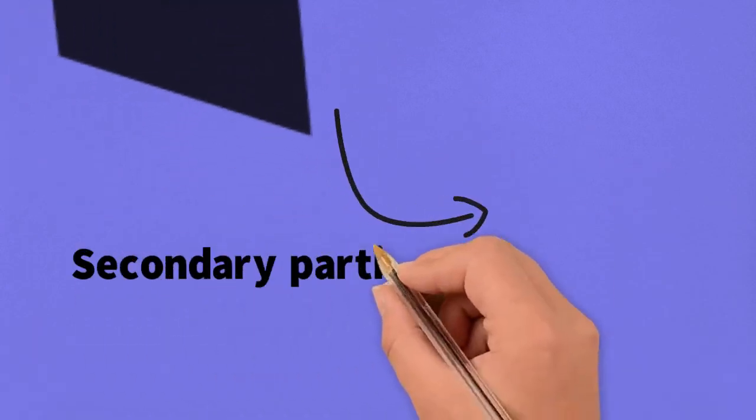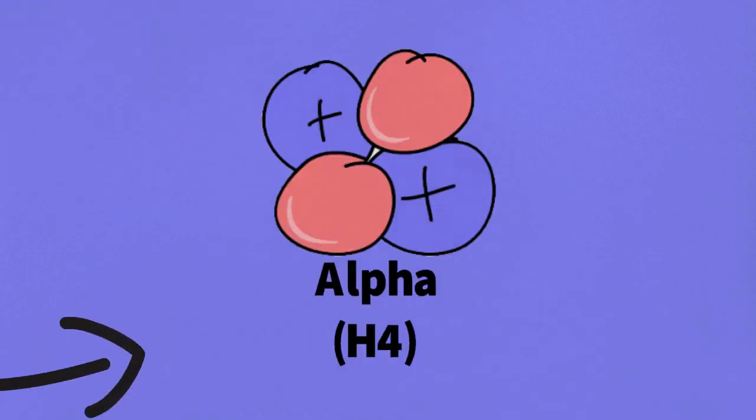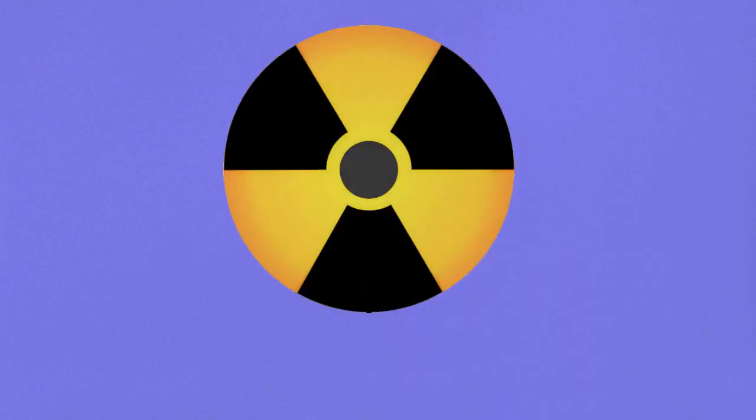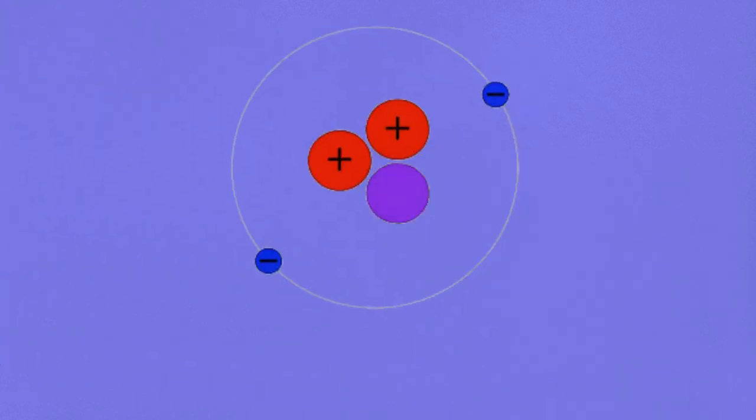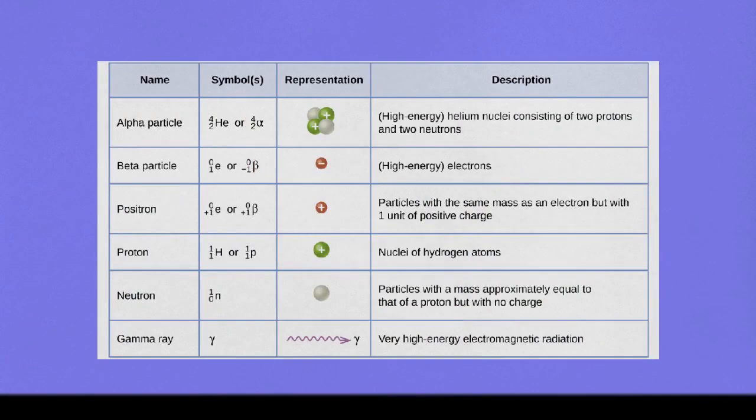We'll have secondary particles such as alpha particle, neutron and triton, gamma ray and helium-3 when the protons interact along their way.